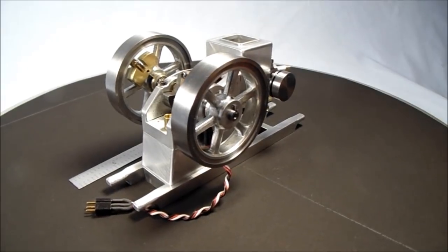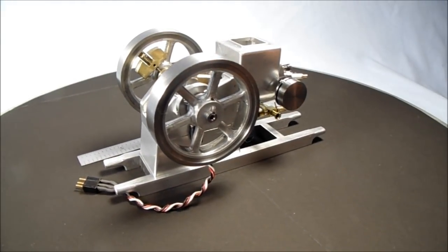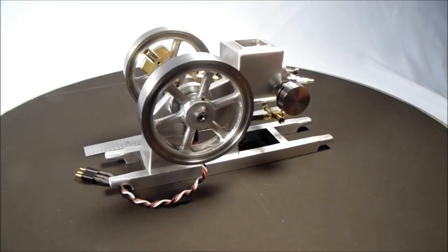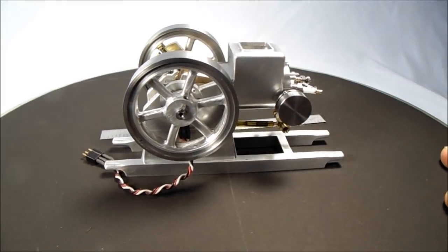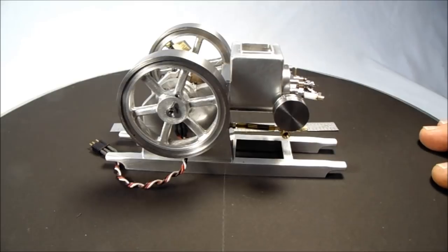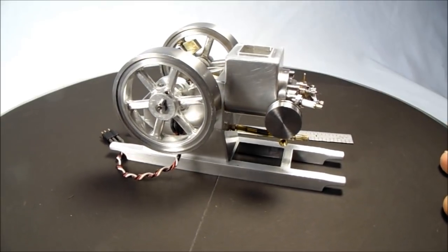The crankshaft is 1144 steel and the connecting rod is bronze. The flywheels are aluminum and they have steel outer rims for the weight.